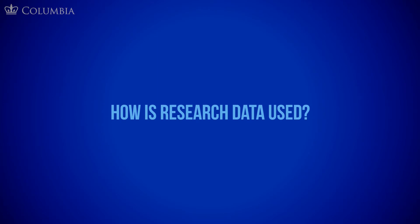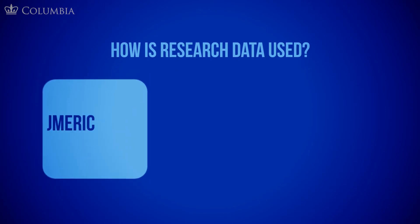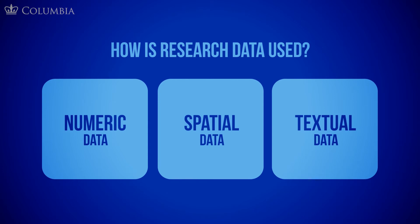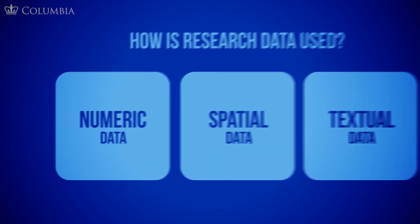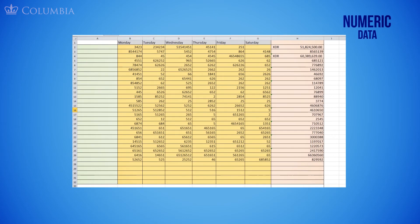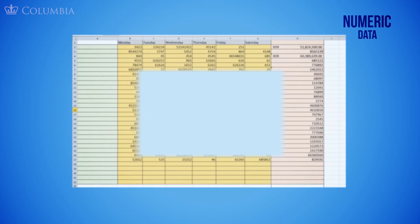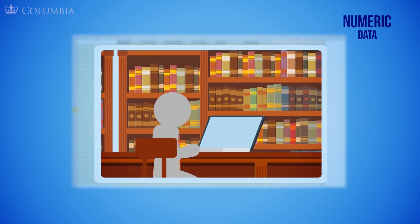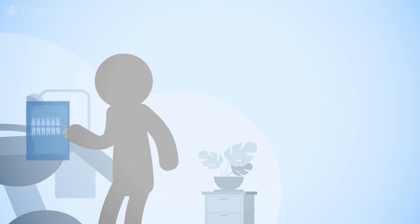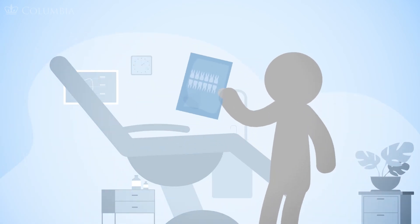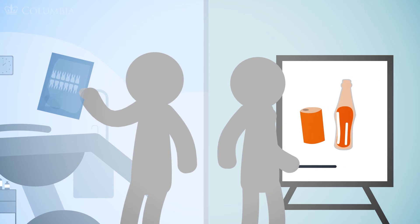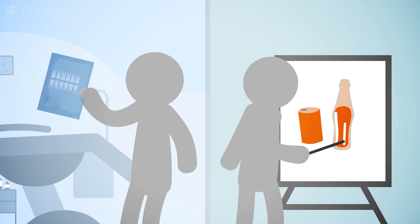How is research data used? Let's take a look at some examples of how researchers employ three main categories of research data. Number one: numeric data. Information, often numbers represented in tables, are most commonly organized in the form of a spreadsheet or a CSV file. A researcher might make a spreadsheet of the percentage of the United States population that buys a certain brand of soda broken down by age. This dataset could be used by researchers to examine various aspects of dental and medical health, or by soda marketing teams to help them determine how best to advertise.